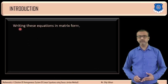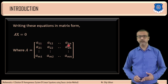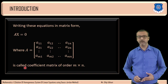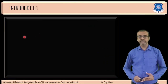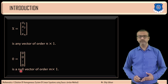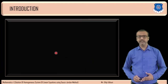Now writing these equations in matrix form. Where capital A equals to the coefficient matrix with elements a11, a12 up to a1n in the first row; a21, a22 up to a2n in the second row; and am1, am2 up to amn in the nth row. This is the coefficient matrix of order m by n. x equals to [x1, x2, ..., xn] is a vector of order n by 1, and 0 equals to [0, 0, ..., 0] is a null vector of order n by 1.